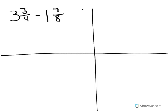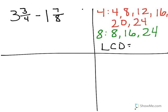I'm going to go ahead and subtract 3 and 3 fourths minus 1 and 7 eighths. The first step is to write my problem. And the next step is to go ahead and find the least common denominator. So in the next step I've listed the multiples of 4 and 8.